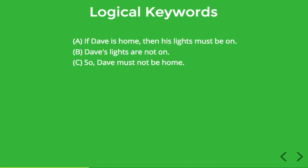What I want to focus on is the word 'so' which we see in statement C. This word isn't really adding any new information to the statement — there's no difference in information content between saying 'Dave must not be home' and saying 'so Dave must not be home.' The word 'so' isn't stating any information; it's just guiding you to the fact that C is actually the conclusion of the argument. It's an indicator that we're dealing with a conclusion.